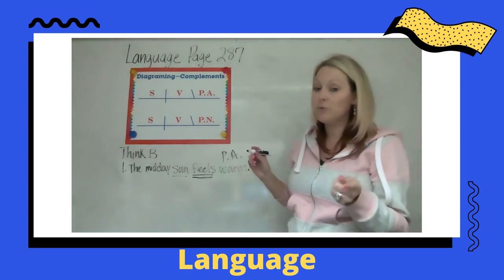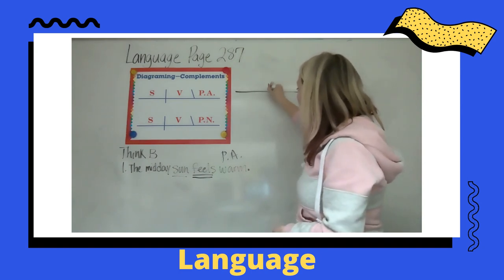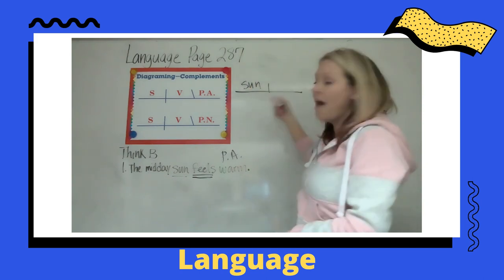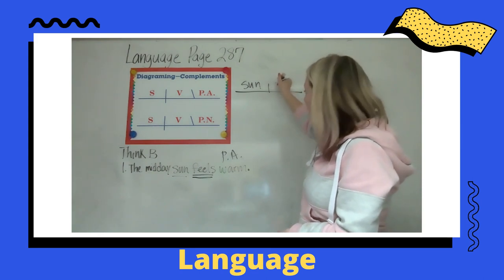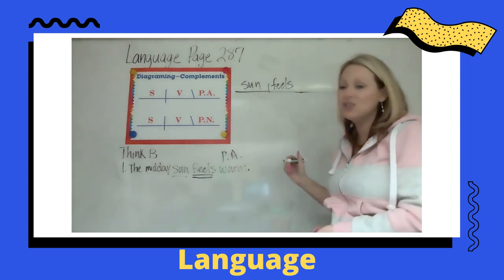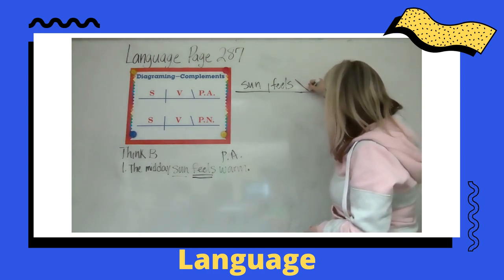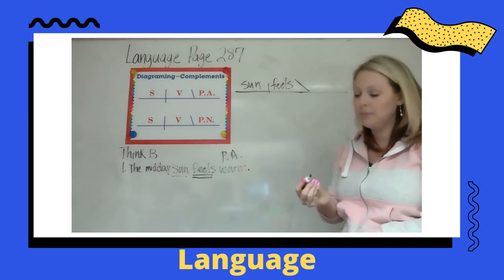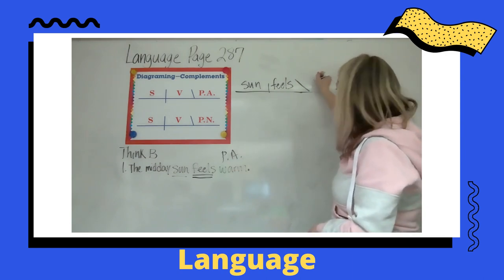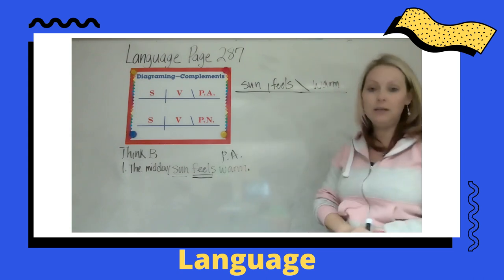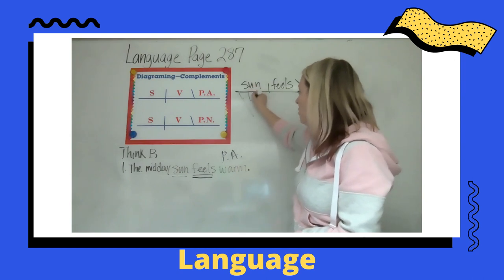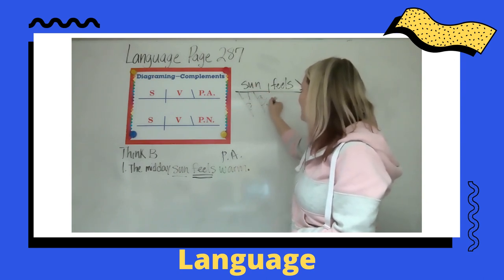Diagramming the predicate adjective is a little different. We start with our line, subject sun on the left, feels on the right. Now for the predicate adjective we use a diagonal line — not a straight vertical line — and we write warm on that line. Then we do our two adjectives for sun: 'the' and 'midday.'